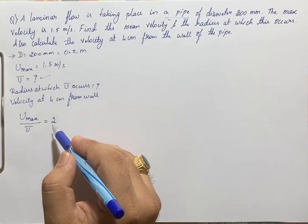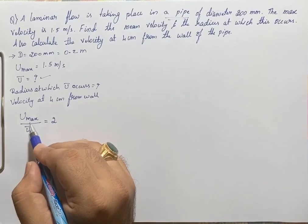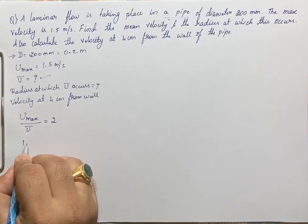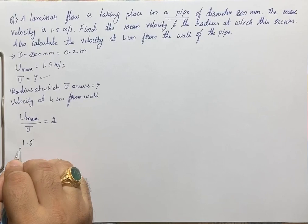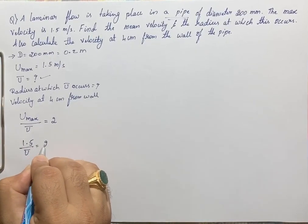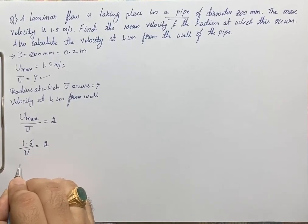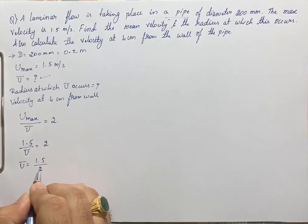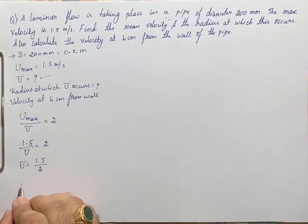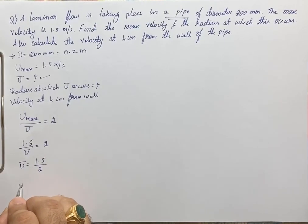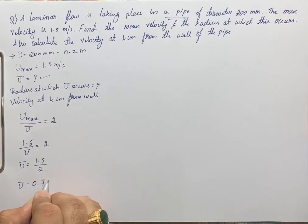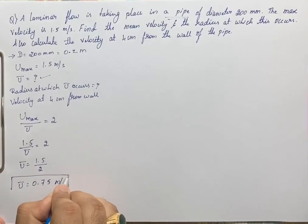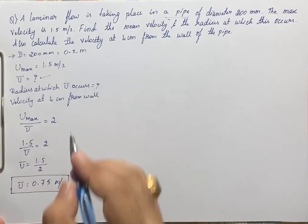Since u_max is given as 1.5, we write 1.5 / u_bar = 2, which gives u_bar = 1.5 / 2 = 0.75 meter per second. This is the average velocity.